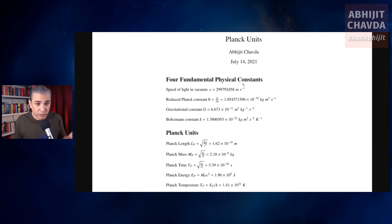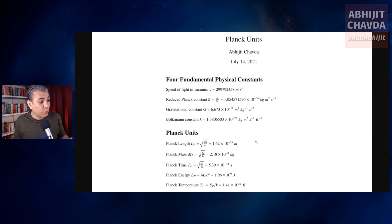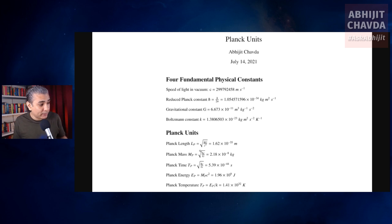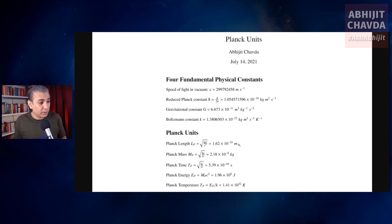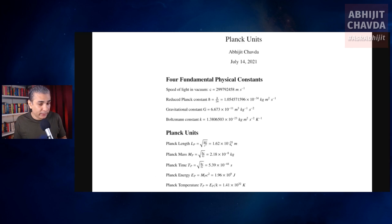These are the four fundamental physical constants. By combining these constants in a variety of ways, we can come up with units called the Planck units — which are the Planck length, the Planck mass, the Planck time, Planck energy, and the Planck temperature. The Planck length is the square root of h-cross times G divided by c-cubed, and if you calculate that, it gives you a length of the order of 10 to the minus 35 meters.